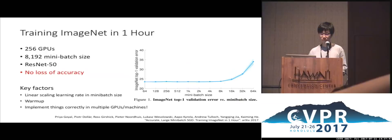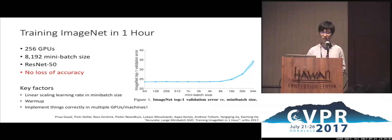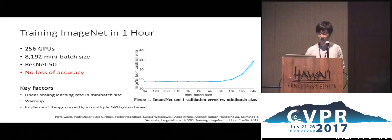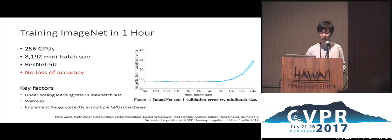Finally, I would like to mention a recent work done by Facebook AI Research and Applied Machine Learning teams. We are now able to train the ImageNet dataset in one hour using 256 GPUs with a mini-batch size of 8,192 using synchronized SGD. We train ResNet-50 on this dataset with no loss of accuracy. Across a wide spectrum of mini-batch sizes from 64 to 8K, the models have more or less the same accuracy.